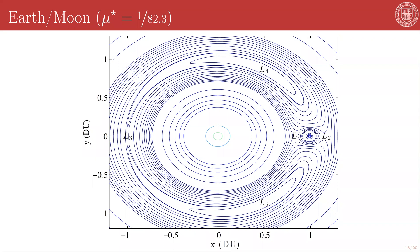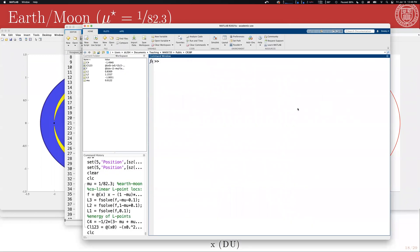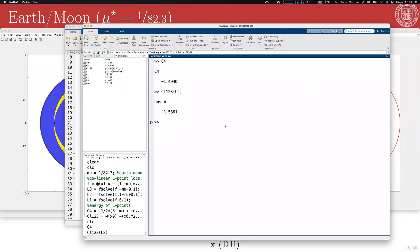We can use our previously derived equations to figure out the characteristics of this system. We can find the Jacobi constant of L4 and L5 as negative 1.4940, and the Jacobi constant of L2 as negative 1.5861, which is an intermediate value. The value for L1 sits at negative 1.5942, which is the lowest of all of them.